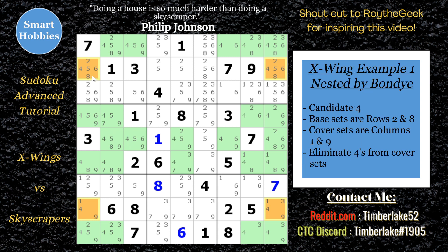Let's look at this puzzle diagram. This is from the puzzle called Nested by Bondi. If you look at the candidate 4s, you'll notice that there's only two places for a 4 in row 2 — here in column 1 and in column 9, highlighted in orange. If you go down to row 8, there's only two places for a 4 as well, and that's in column 1 and column 9. Same candidate 4, same two positions in two different rows — columns 1 and 9. So what we have here is an X-Wing.